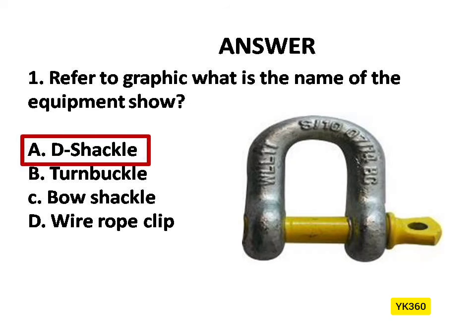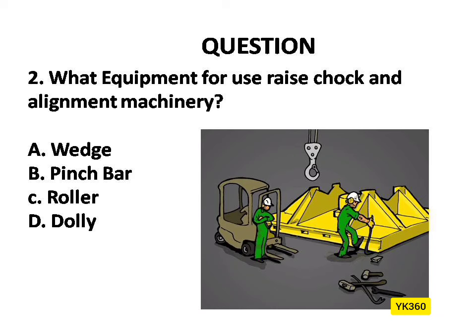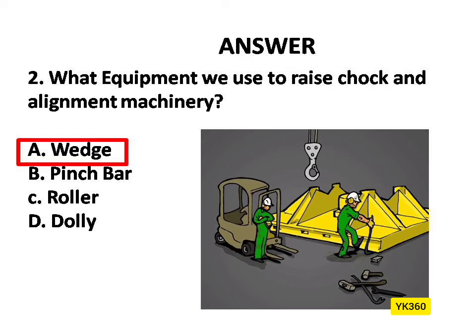Question Number 2. What equipment do we use to raise and align machinery? Options are: A. Wedge, B. Pinch Bar, C. Roller, D. Dolly. Answer is Option A: Wedge.